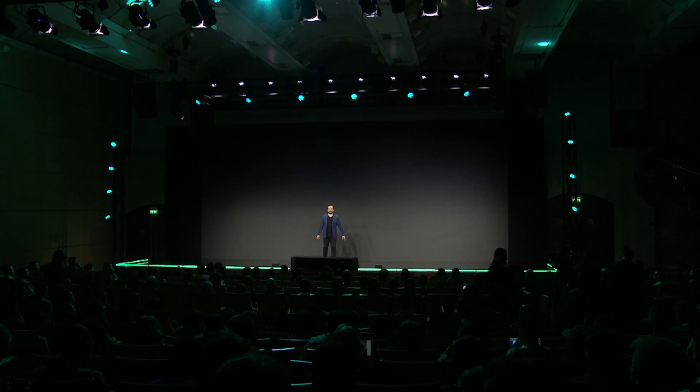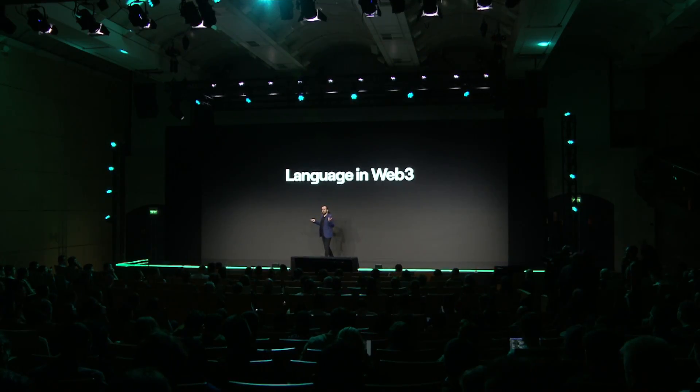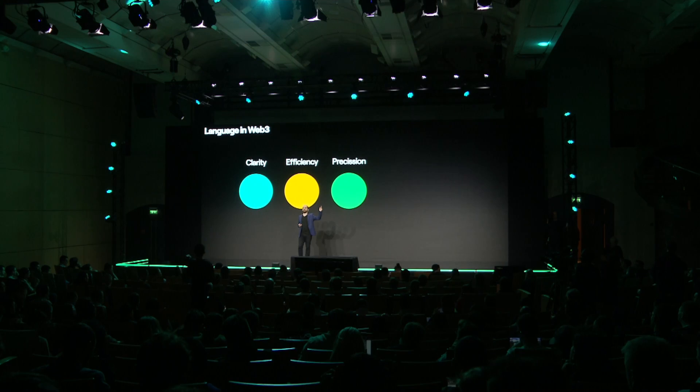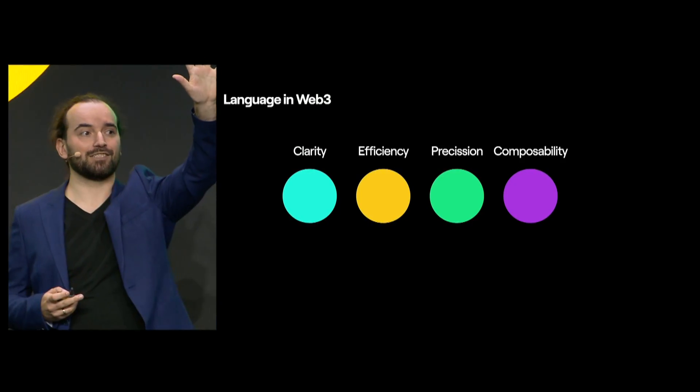Why language? The internet is about communication, and the blockchain is a layer of trust built over the internet. So it only makes sense that we cannot make good use of it unless we have a very trustworthy language to work with. What does it mean to have a good language in Web3? I think languages need to have many qualities, and today I've chosen to talk about five of them: clarity, efficiency, precision, composability, and power.